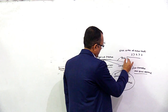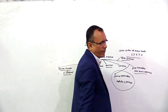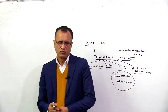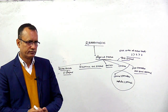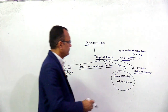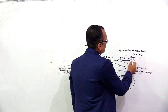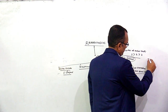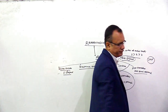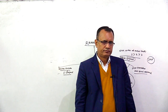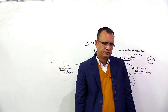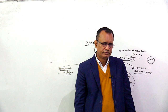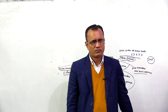Next, there was thick enamel on their teeth. Also, their upper jaw is smaller, and in the lower jaw there was less prognathism than apes. So this is the physical feature of Ramapithecus.